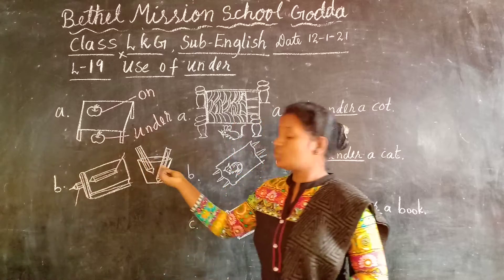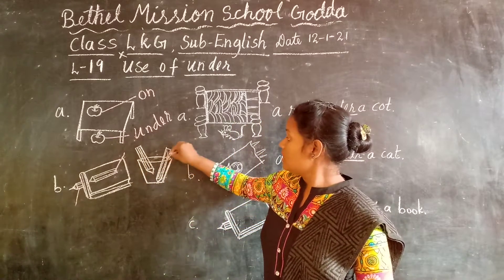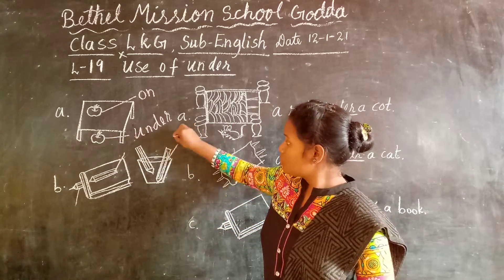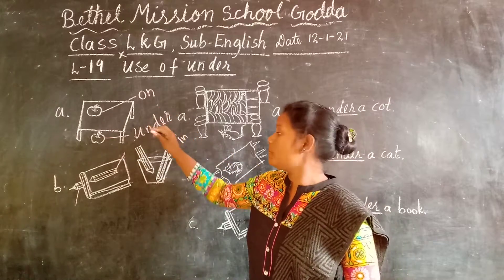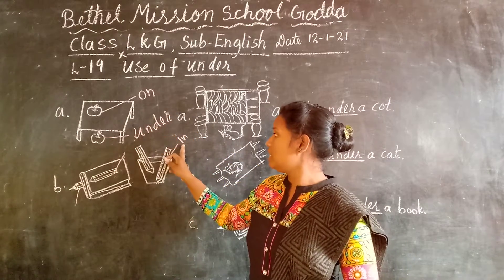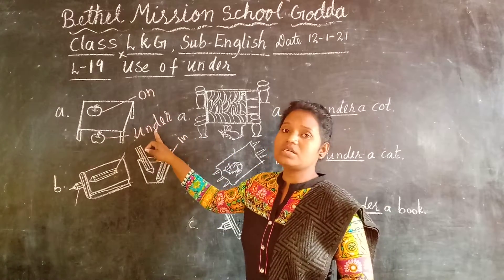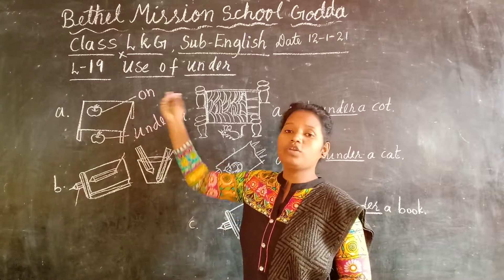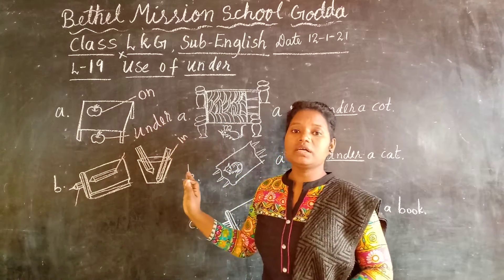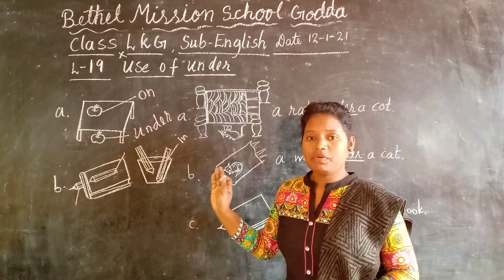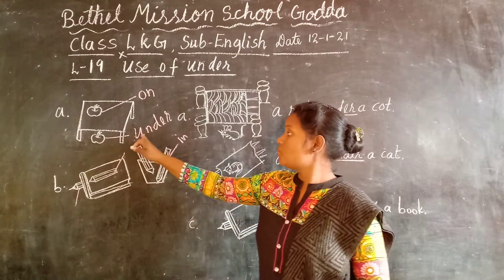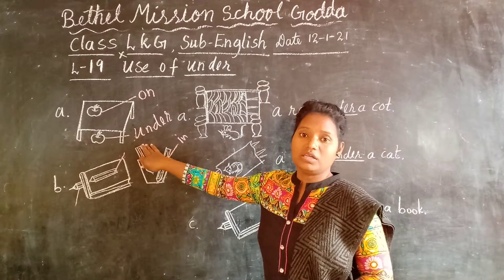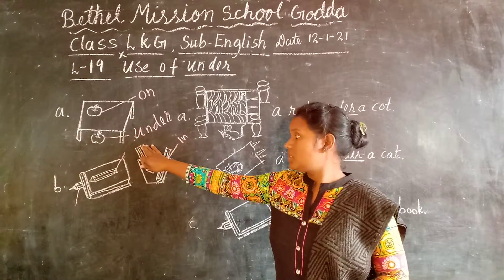These two pencils are in the glass. So these three words are prepositions: in, under, and on. So in and on you have learnt previously. Today we are going to learn under — usage of under.